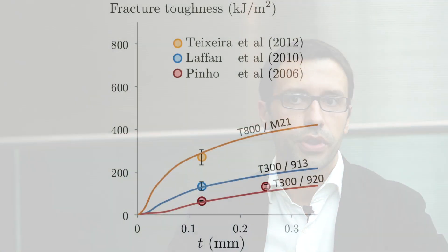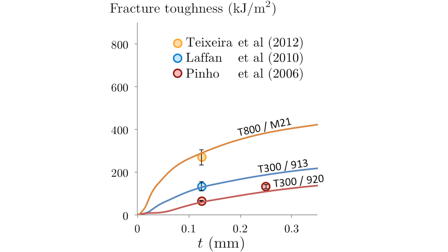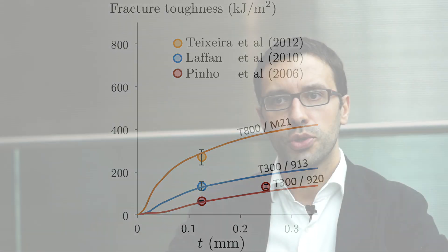The model we developed following this approach is the first to predict the size-dependent translaminar fracture surface from constituent properties. In fact, this model can be used not only for structural design but also for material development since the predictions are obtained from fiber matrix and interface properties.